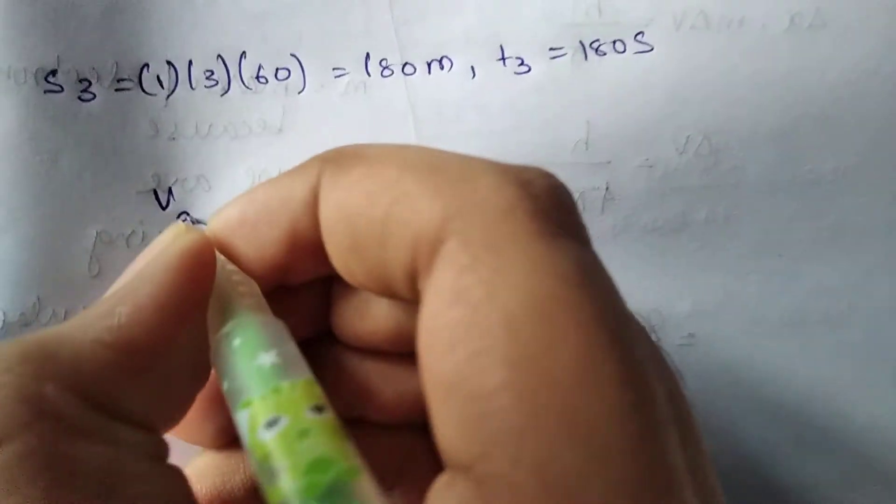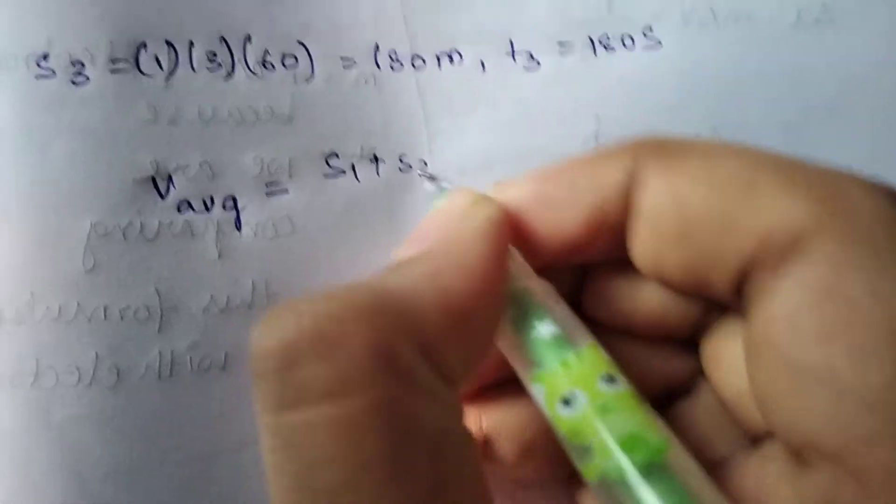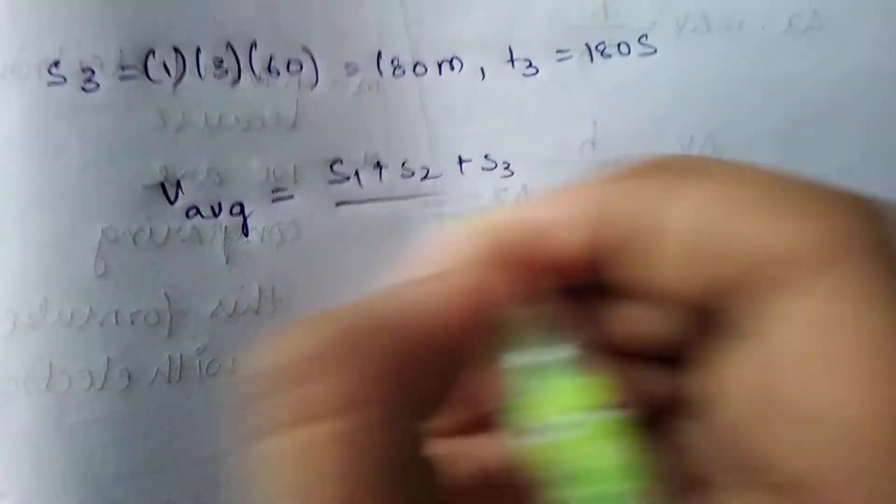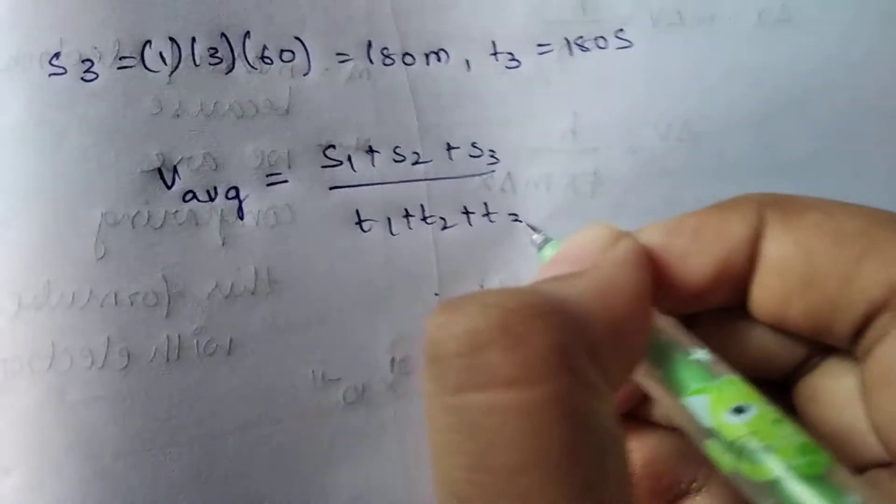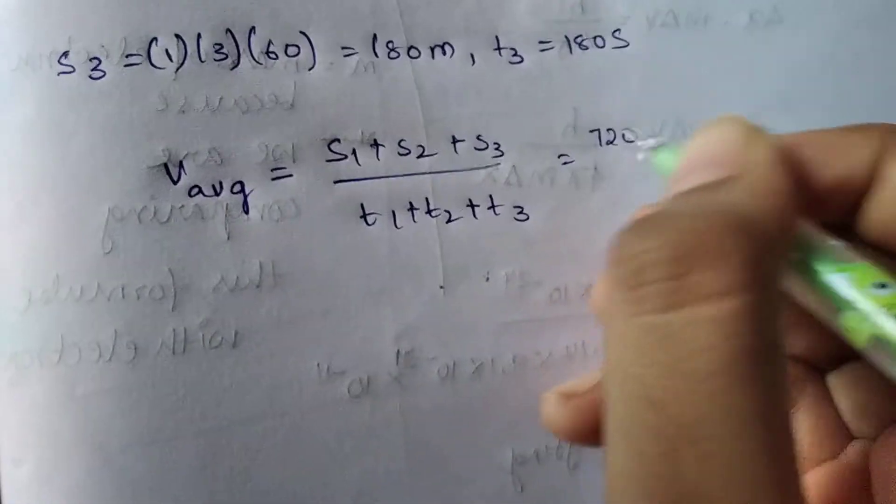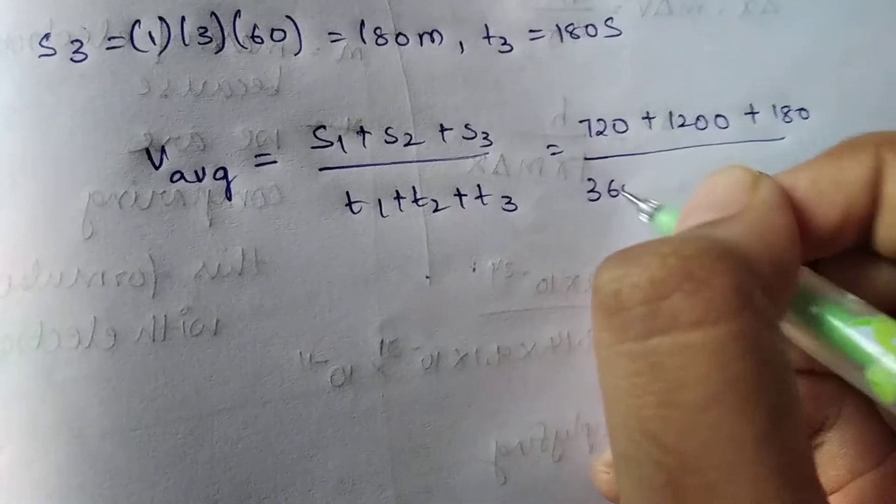Next, average speed equals s1 plus s2 plus s3 divided by t1 plus t2 plus t3, which equals 720 plus 1200 plus 180 divided by 360 plus 300 plus 180.